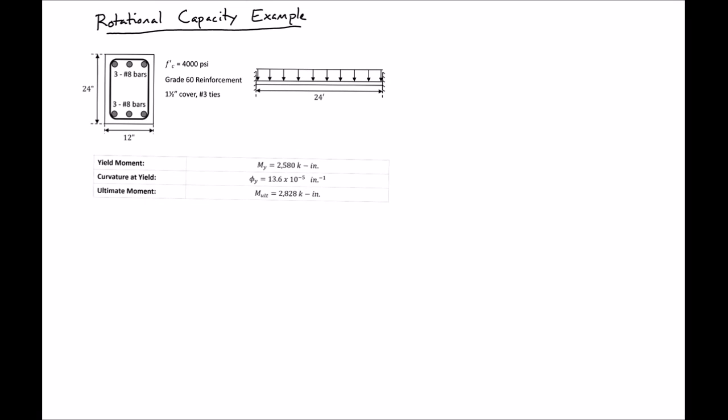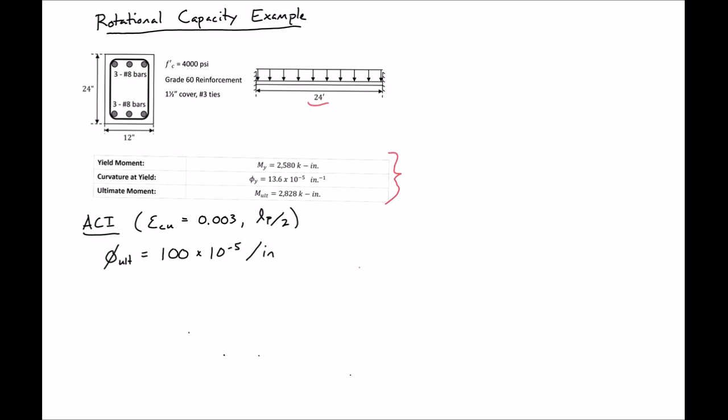In this example problem we're going to find the plastic deformations of a fixed-fixed beam. Our beam has a length of 24 inches and we found our yield moment and our ultimate moment to be the given values. We also found our yield curvature. We'll also need our ultimate curvature, and in this example we're going to use the ultimate curvature found using the ACI procedure, which assumes a strain in compression at ultimate of 0.003 and a hinge length of LP over 2.